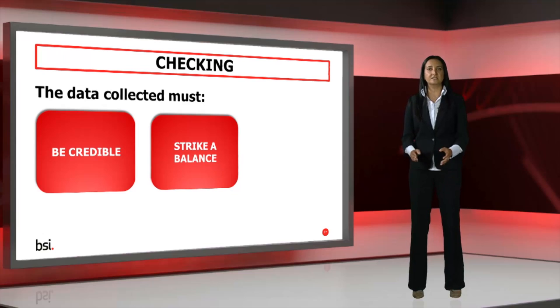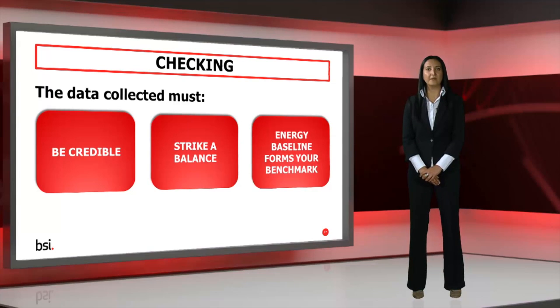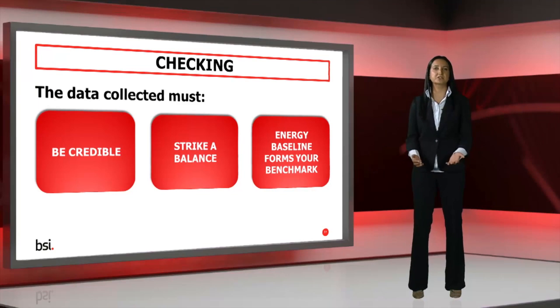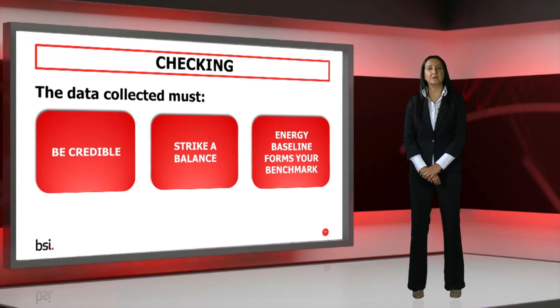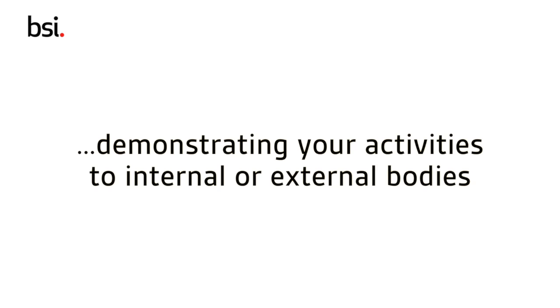Any significant deviation of energy performance must be recorded and corrective action may be applied. Finally, bear in mind that the measurements you took when developing the energy baseline are likely to be the same as those taken to assess your performance improvement. Make sure from the outset that the items you measure are appropriate for what you are trying to do and that you take measurements over a long enough period of time to capture a full energy cycle. This part of the process is essential for demonstrating your activities to an internal or external body.